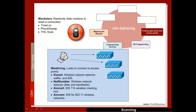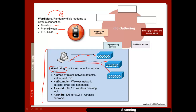We might also look for access points and modems. War dialers randomly dial modems waiting for a connection tone — tools such as ToneLoc, PhoneSweep and THC-SCAN. For wireless access points, tools such as Kismet, NetStumbler, AirSnort and AirSnare are known as war driving tools, which are able to connect to access points and find their details.